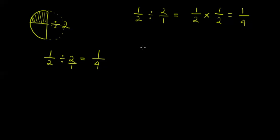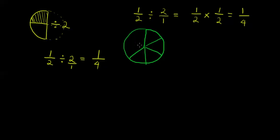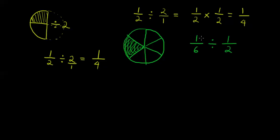Let me illustrate it another way. Let's say I have something divided into six pieces — first divided into three, then into halves again. I'm looking at one of those pieces, so I have one sixth. Now I want to divide one sixth by one half. The question is: how many times does a half go into a sixth?